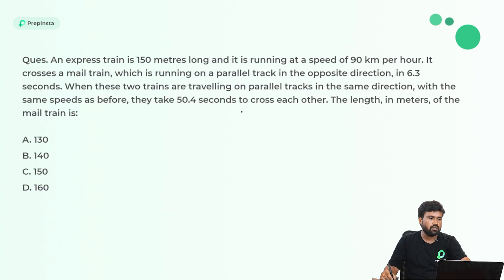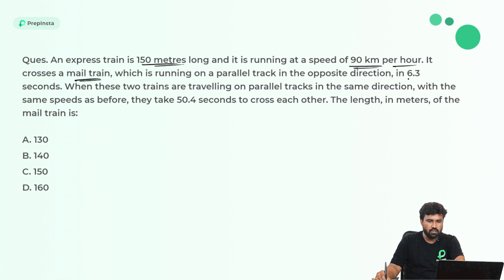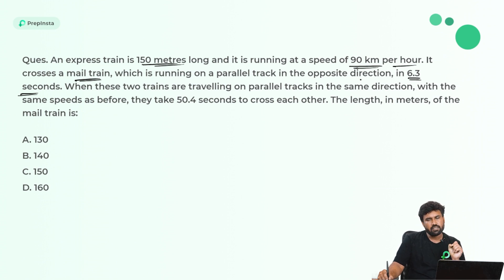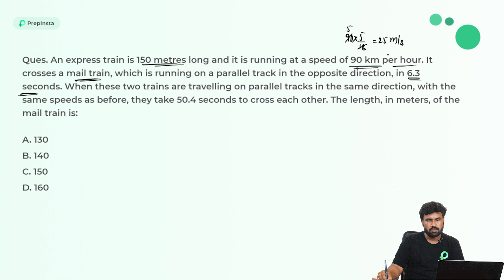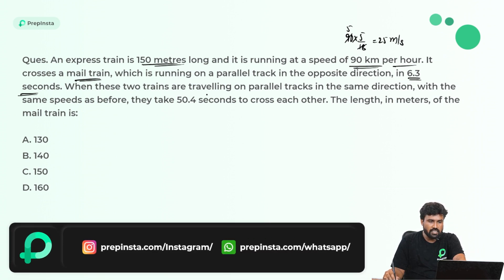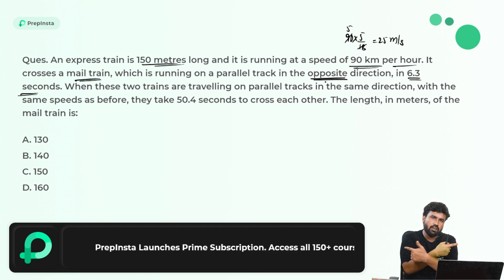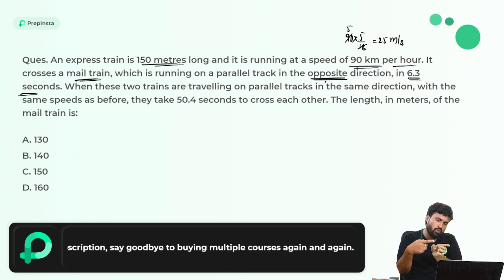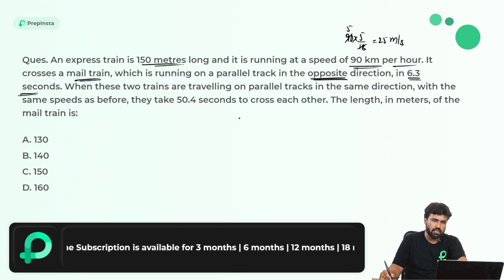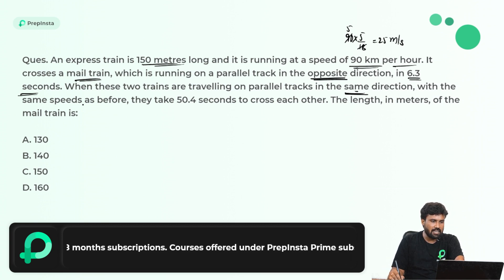An express train is 150 meters long and running at 90 km/h. It crosses a mail train running on a parallel track in the opposite direction in 6.3 seconds, and in the same direction in 50.4 seconds. Whenever you have seconds and km/h, convert speed to meters per second: 90 × 5/18 = 25 m/s. Opposite direction means speeds are added; same direction means speeds are subtracted.